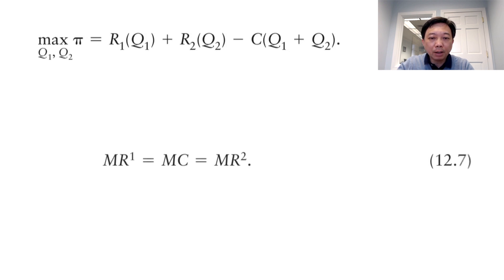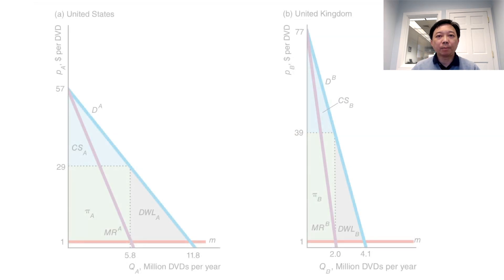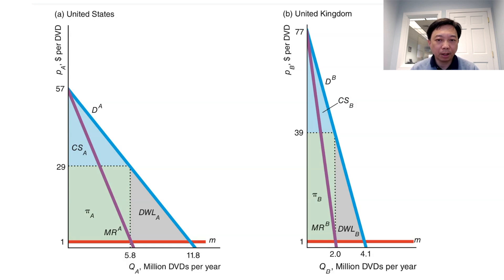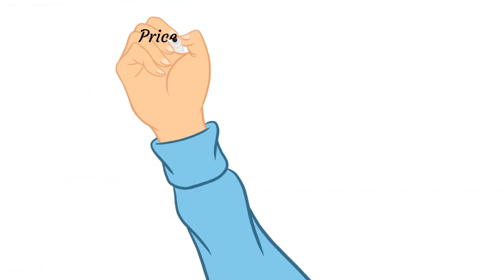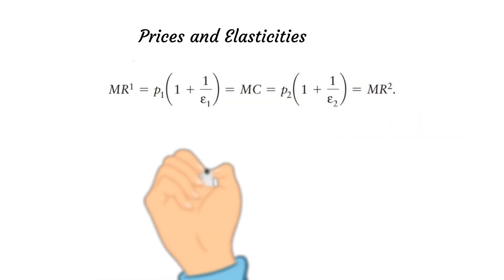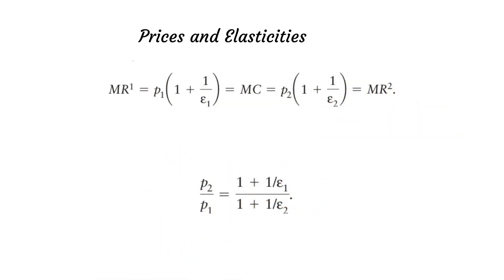Suppose consumers in the United States market are more price elastic than consumers in the UK market, and the monopoly has a constant marginal cost. Then it will charge a higher price and sell fewer products in the UK than in the United States. The price a monopoly can charge is negatively related to the elasticity of the demand curve it faces.